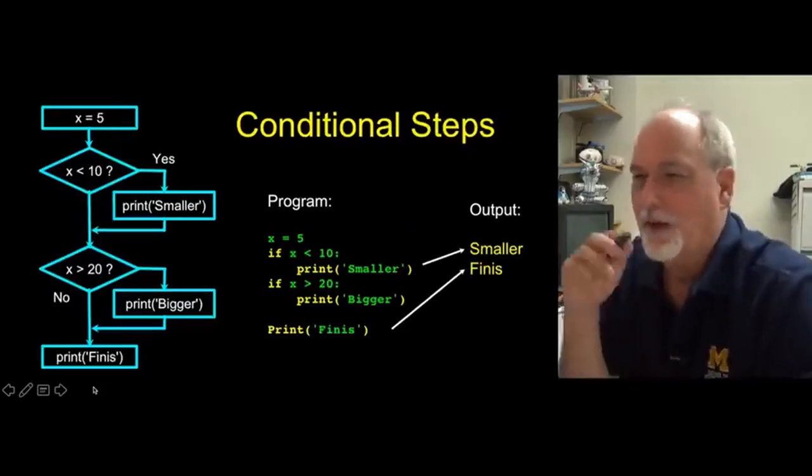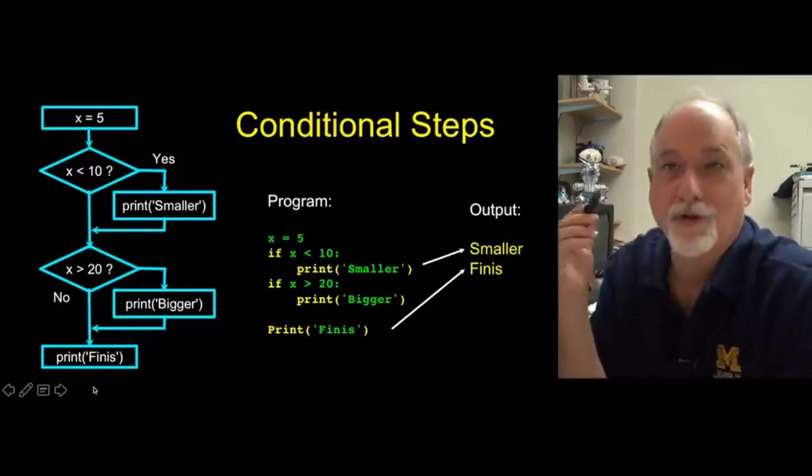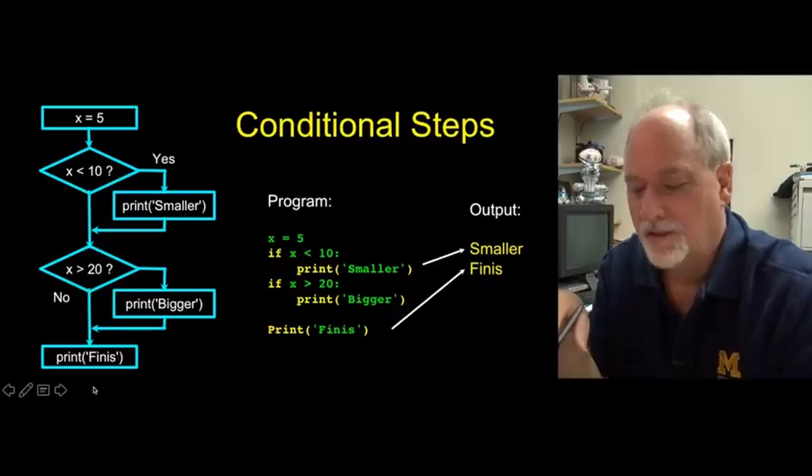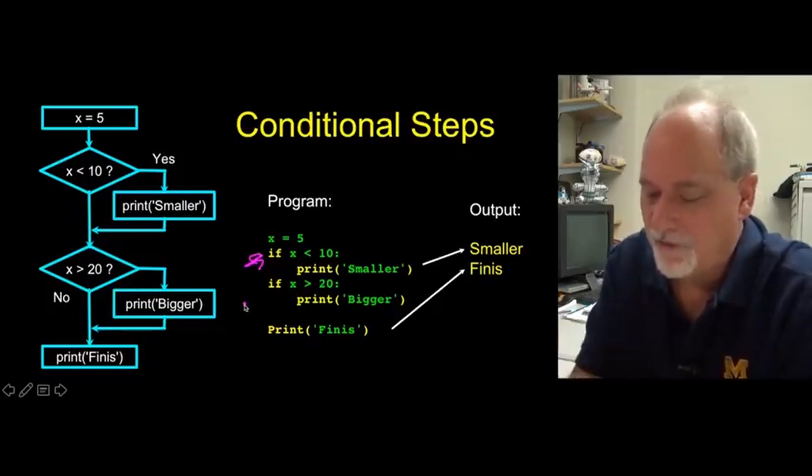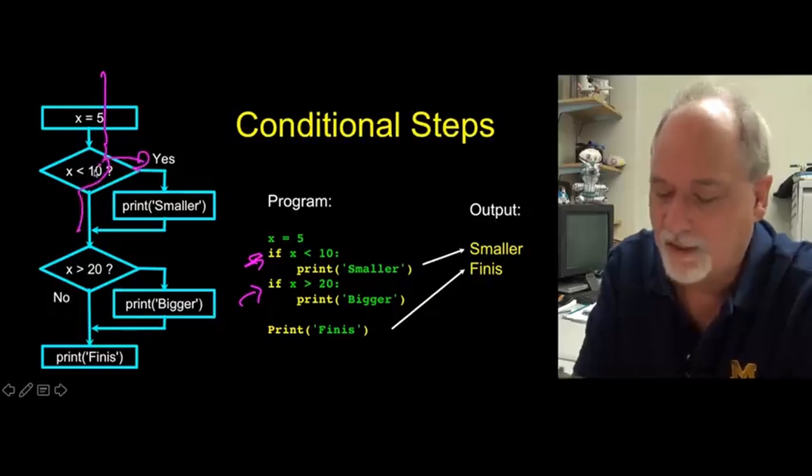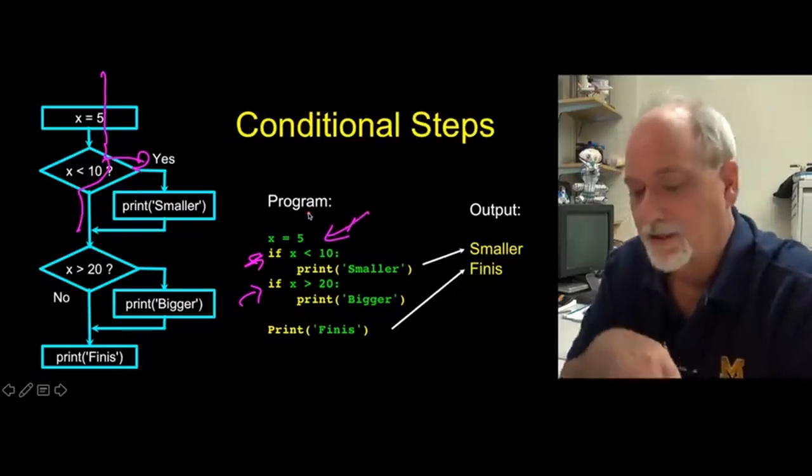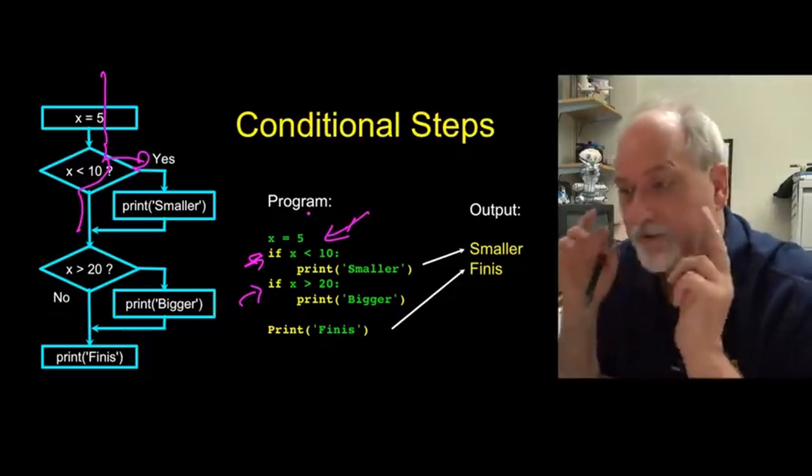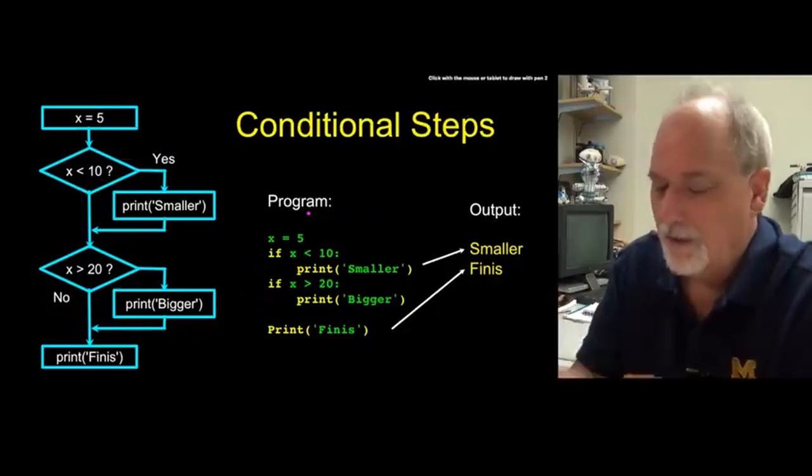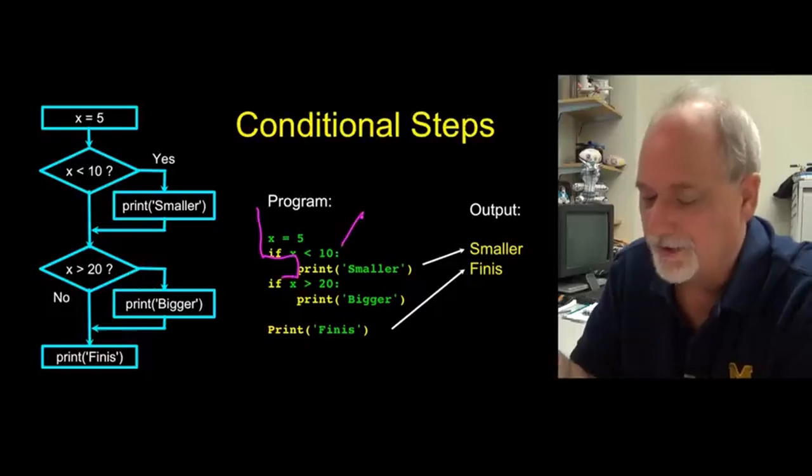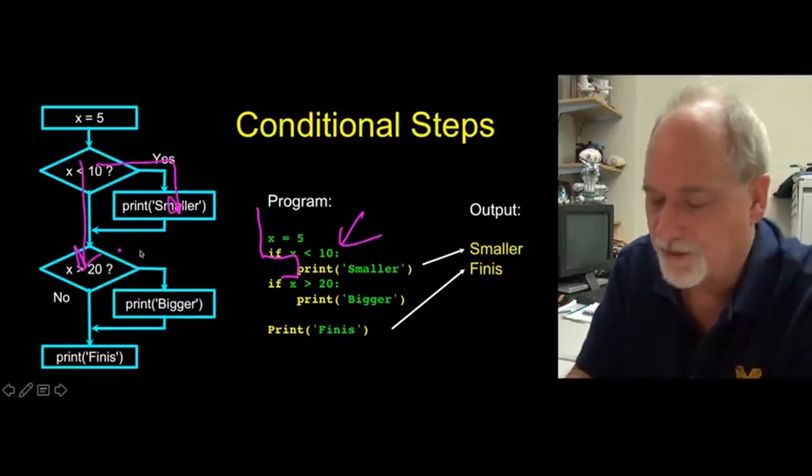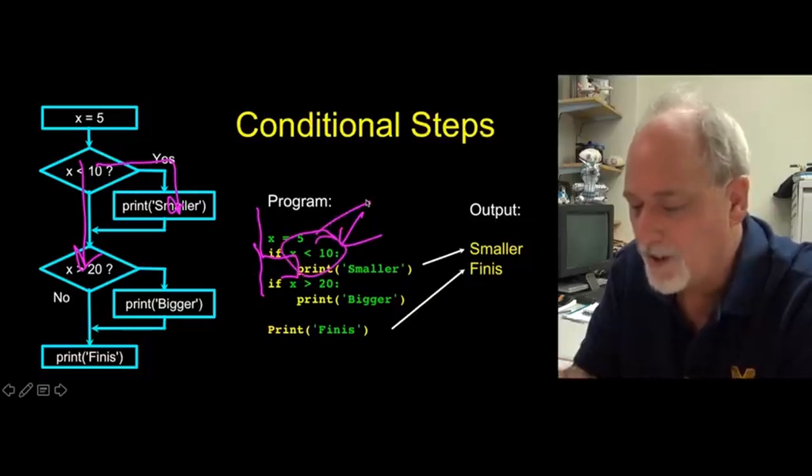The next thing we do is what are called conditional steps, and this is where it starts to get intelligent, where you are able to encode your brain into the computer. Like, oh wait a sec, let's only do this step if something is true. And the syntax that we tend to use here is the reserved word if. And so the if is like a little fork in the road. You can go one way or you can go another way, and you're asking a question. So inside the if statement there is a question saying is x less than 10, that resolves to a true or false.